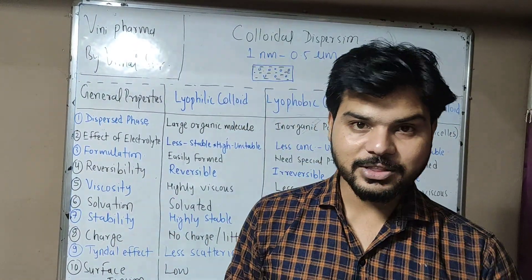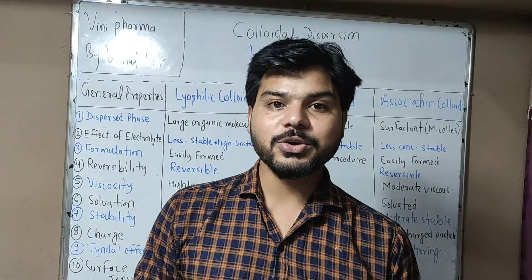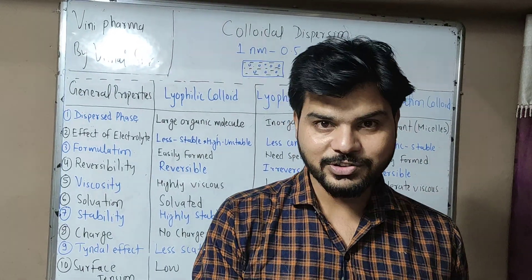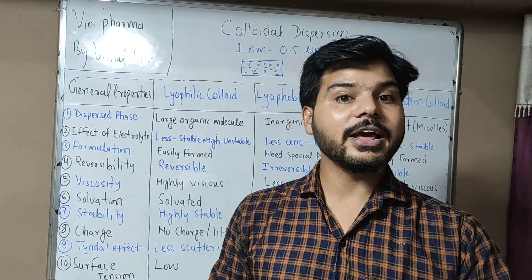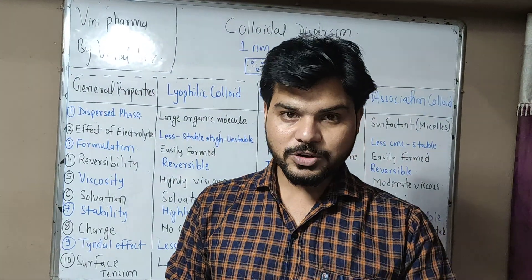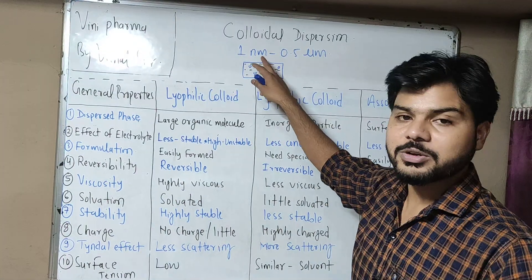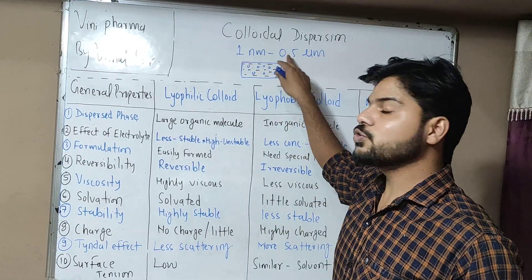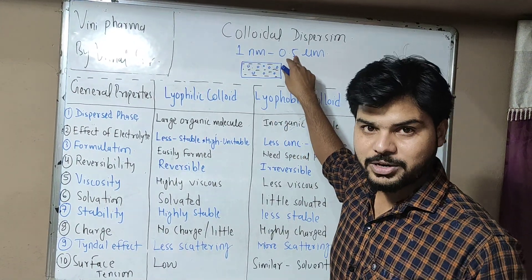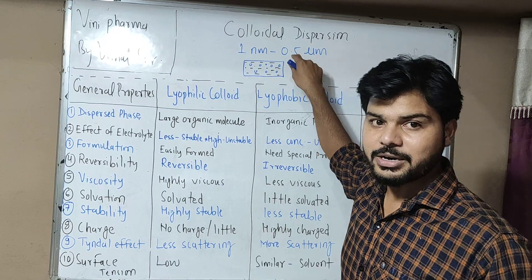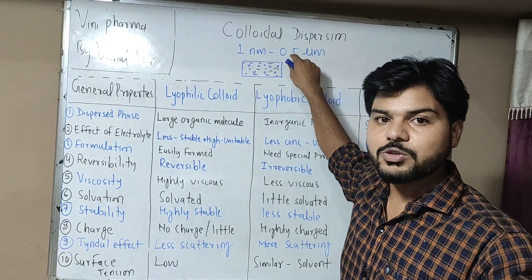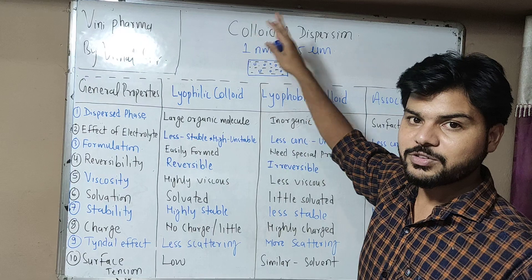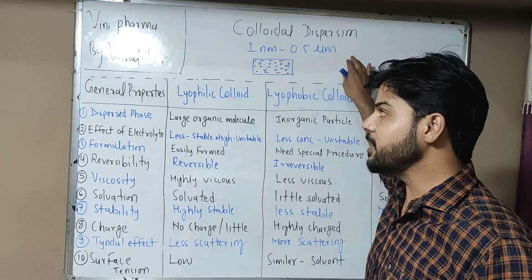Hello everyone, welcome to Vini Pharma. This is Rishal here, and today we are going to study about colloidal dispersion, their classification, and their general characteristics. Colloidal dispersion is where particulate matter of 1 nanometer to 0.5 micrometer or 1 micrometer are distributed throughout the dispersion medium — dispersed particles or globules dispersed into the dispersion medium.